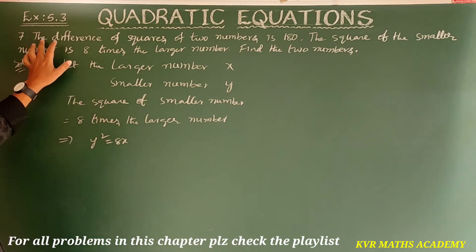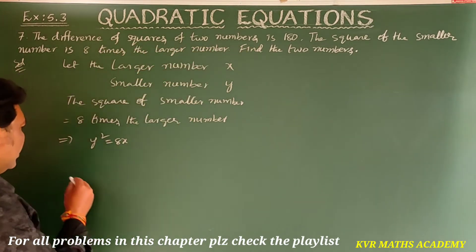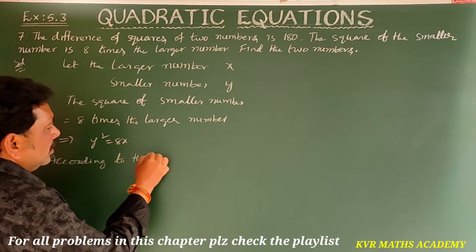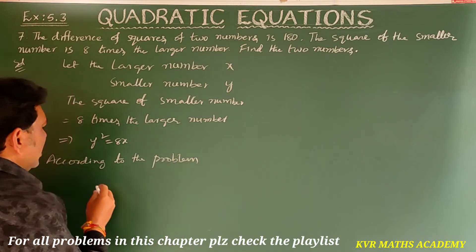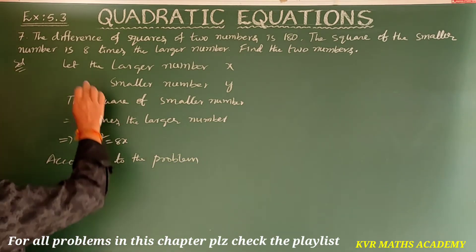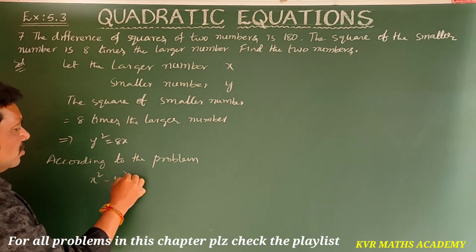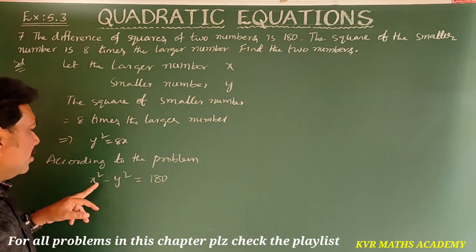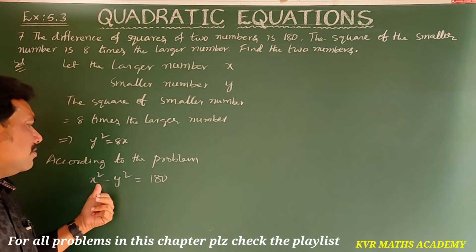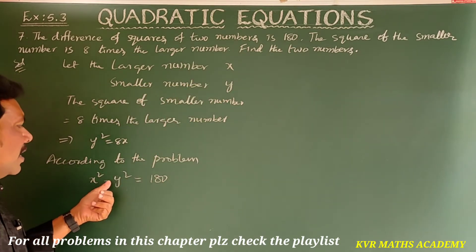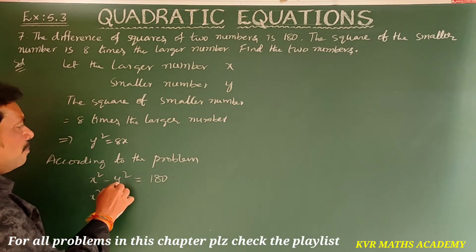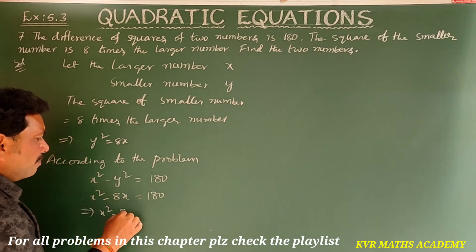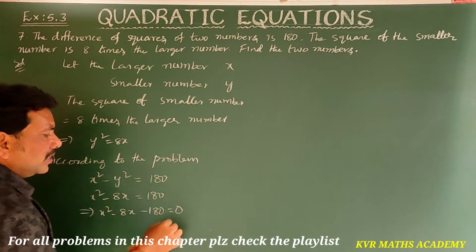Another condition given is the difference of squares of 2 numbers is 180. According to the problem, X squared minus Y squared is equal to 180. X is the larger number, that's why X squared comes first. Substituting Y squared equals 8X, we get X squared minus 8X equals 180, which gives us X squared minus 8X minus 180 equals 0.